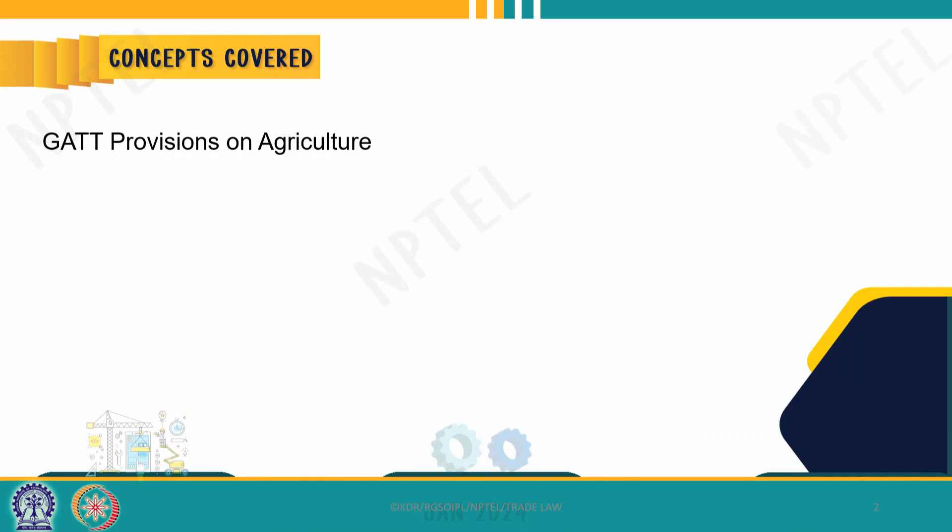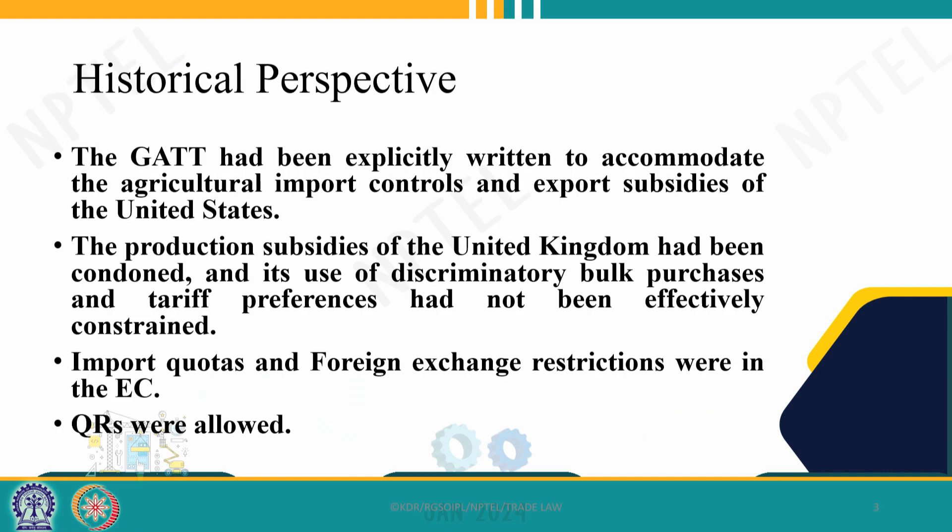The world-famous famine which occurred during the Second World War in Kolkata is also to be specially mentioned. In this class we will specifically see the GATT provisions with regard to agriculture.